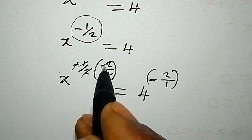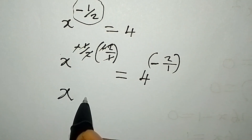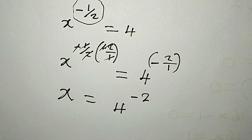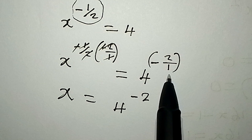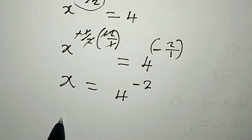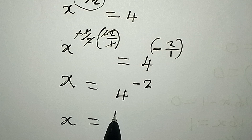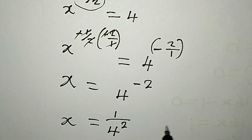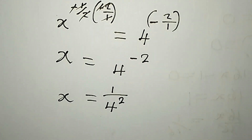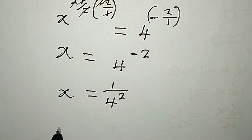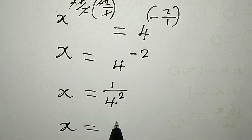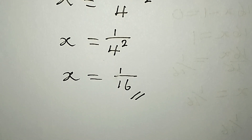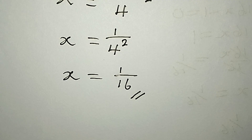The negatives cancel each other on the left, so x equals 4 to the power of negative 2, which is the same as x equal to 1 over 4 squared. The negative exponent becomes 1 over, so x equals 1 over 16 — exactly what we got from the first method. Thank you for watching.